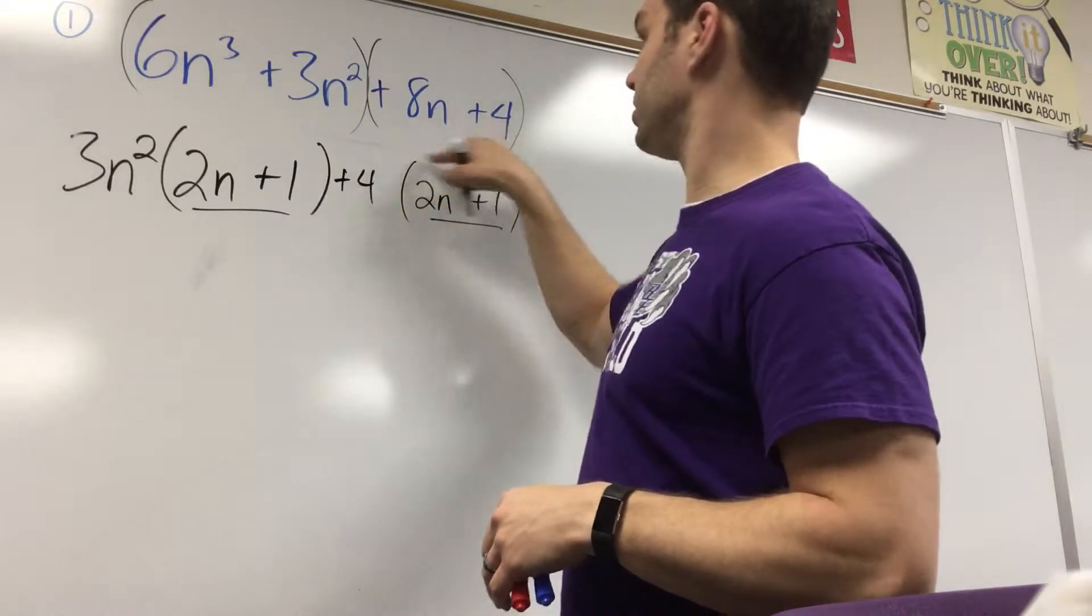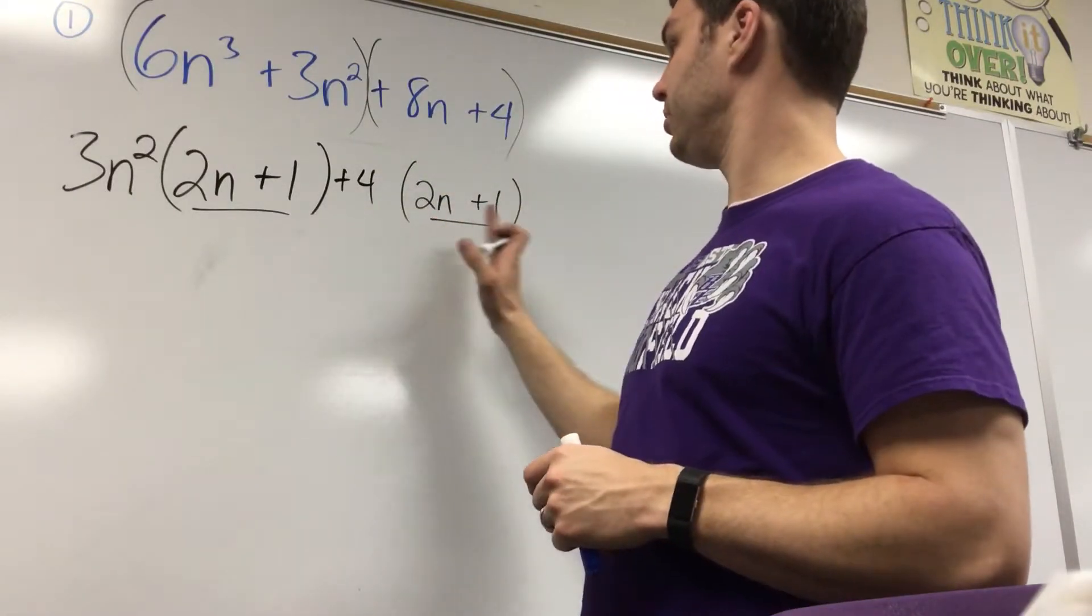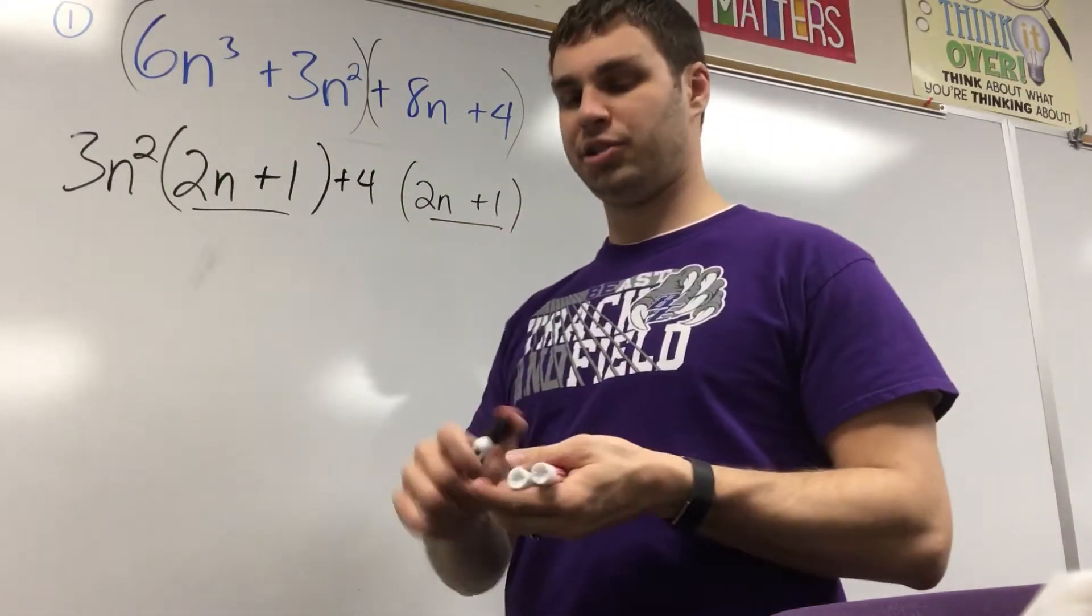So if I take out a 4 from this second set, I get 2n plus 1. And then the way you write your answer,